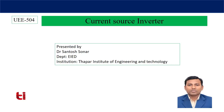Today I am going to discuss current source inverter. It is similar to voltage source inverter but some differences are there that I will discuss today. Last class I discussed sinusoidal pulse width modulation and modified sinusoidal pulse width modulation. We have seen that if you want to improve the output voltage or current quality, you have to apply a suitable pulse width modulation technique. We will not discuss this current source inverter in detail, just the basics.